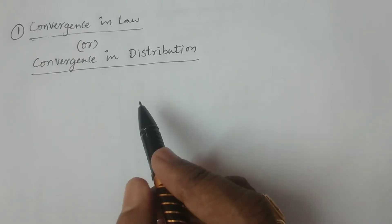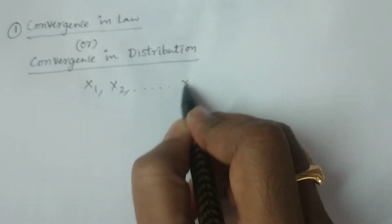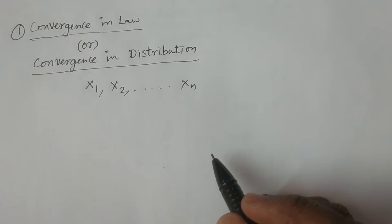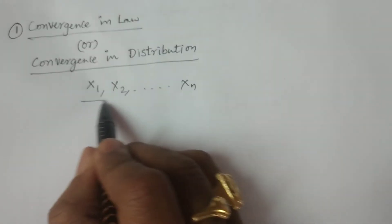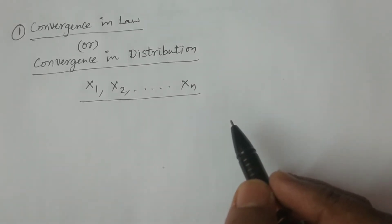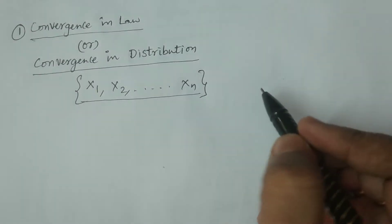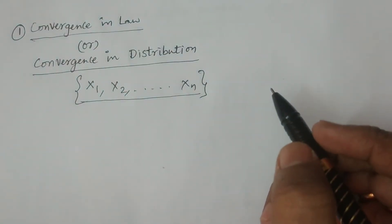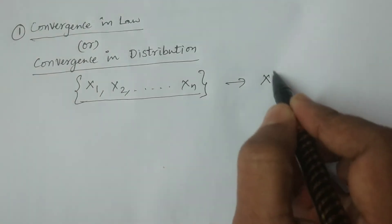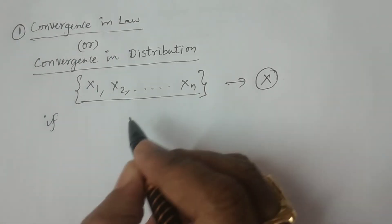For this, what we have to consider is a sequence of random variables x1, x2, and so on xn. When do we say a sequence of random variables x1, x2, and so on xn converges in law or convergence in distribution to a random variable X? It is said to converge in law or in distribution to a random variable X if it satisfies a particular condition.